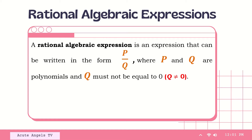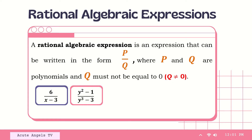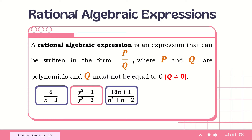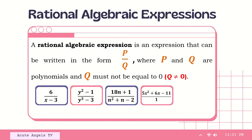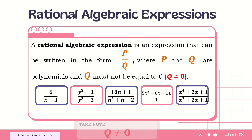For us to recognize rational algebraic expressions, let us examine the following examples. The first expression is 6 over x minus 3. The second one is y squared minus 1 all over y cubed minus 3. The third expression is 18n plus 1 all over n squared plus n minus 2. The fourth one is 5x squared plus 6x minus 11 all over 1. And the fifth expression is x raised to 4 plus 2x plus 1 all over x squared plus 2x plus 1. All these five expressions are rational algebraic expressions since they contain polynomial expressions in both numerator and denominator respectively.